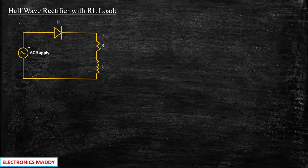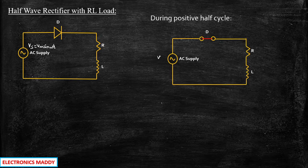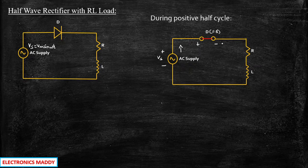Let us consider the supply Vs is equal to Vm sin omega t. In order to understand this in a much better way, let us consider what happens during the positive half cycle. Vs is basically positive. Whenever plus is connected to the anode of the diode and negative is connected to the cathode of the diode, the diode will be forward biased and acts as short circuit. So the current starts flowing through the path and flows through the load — let us call this current as Iout.